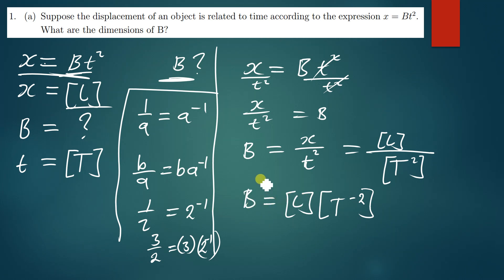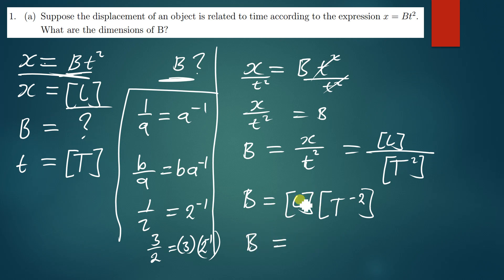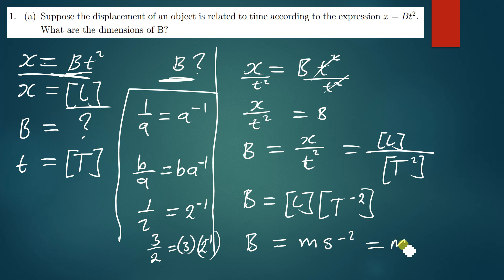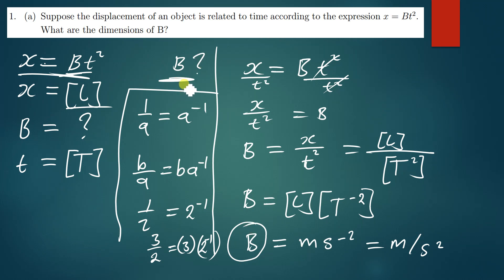Those are the dimensions for b. In SI units, since length is measured in meters and time in seconds, we can write this as meters per second squared — or meters times seconds to the power negative two. This quantity b is simply acceleration, which is measured in meters per second squared.